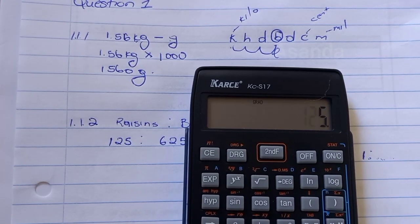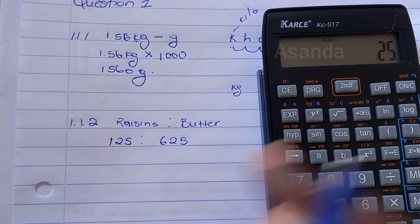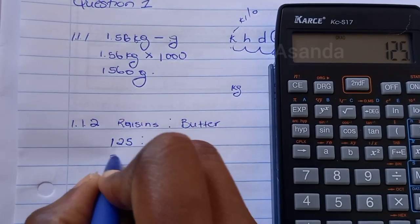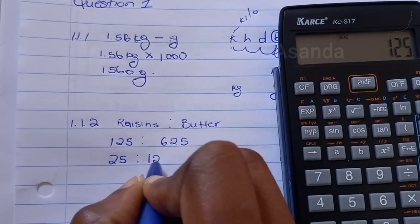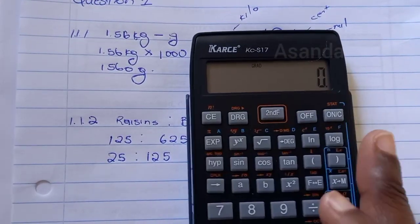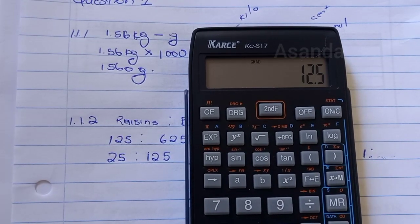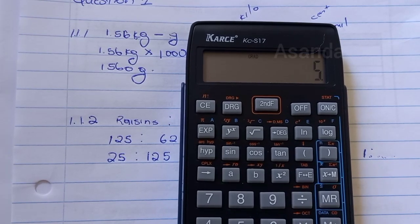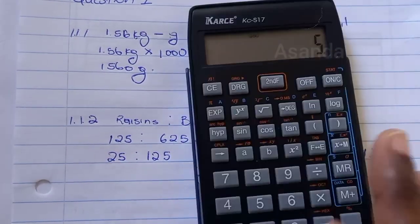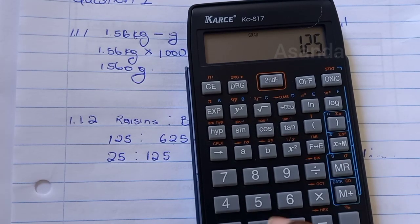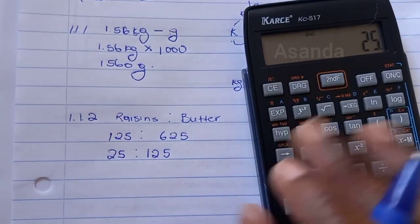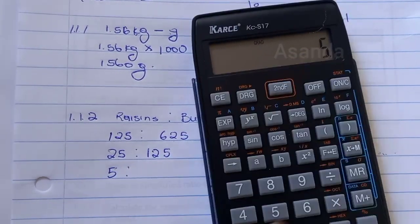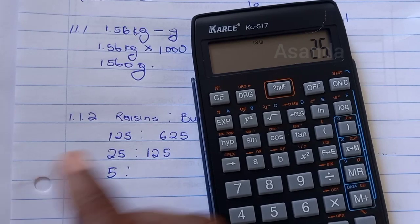So 25 this side. And then let's check on the other side. 625 divided by five gives me 125. So this one will be 25 is to 125. Then I'm going to check again. Can I divide 25 by five? Yes. Can I divide 125 by five? 125 divided by five is 25. So I say 25 divided by five gives me 5 is to 125 divided by five gives me 25.